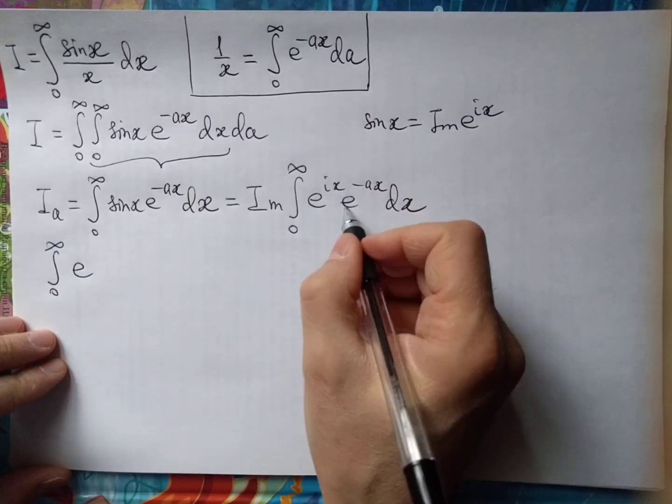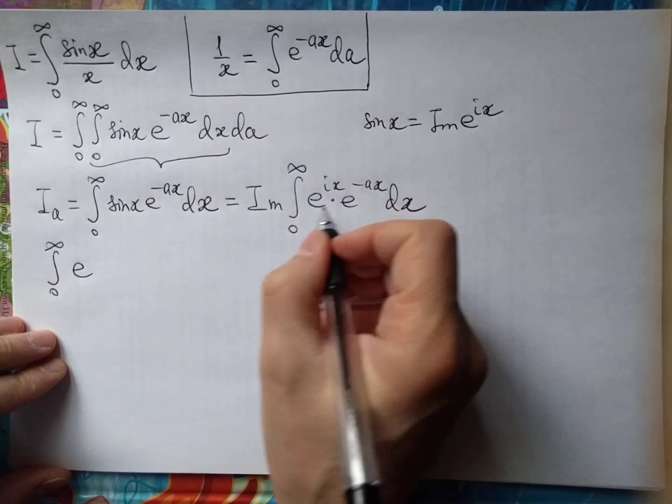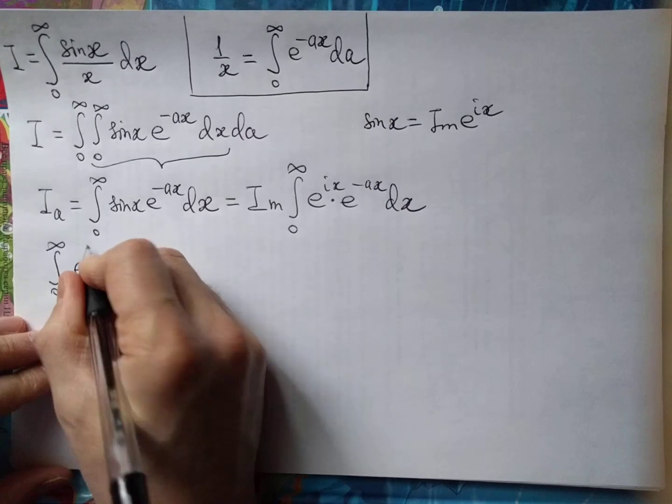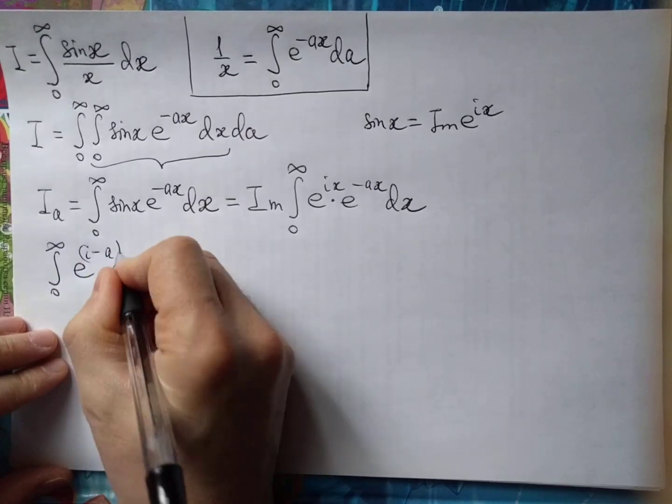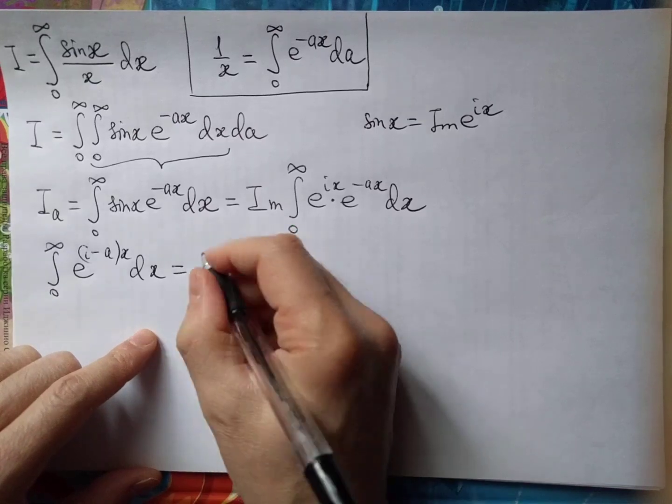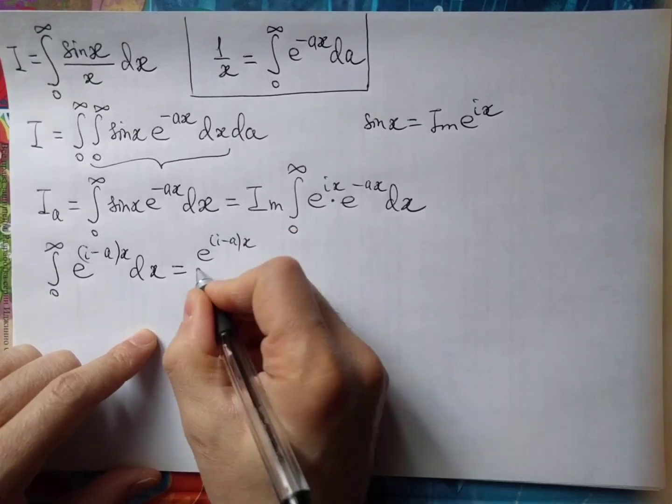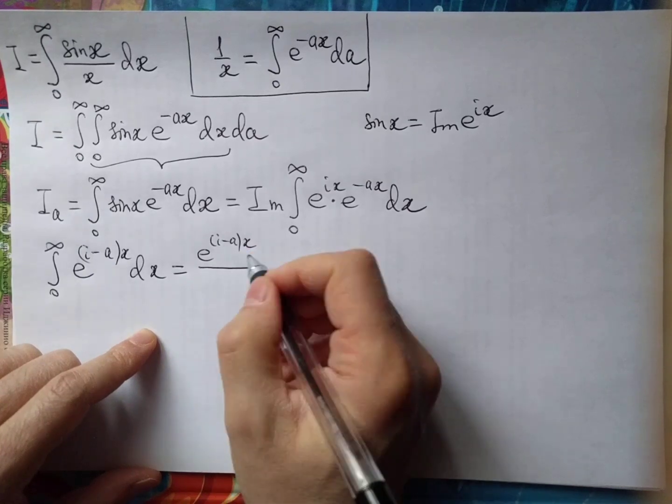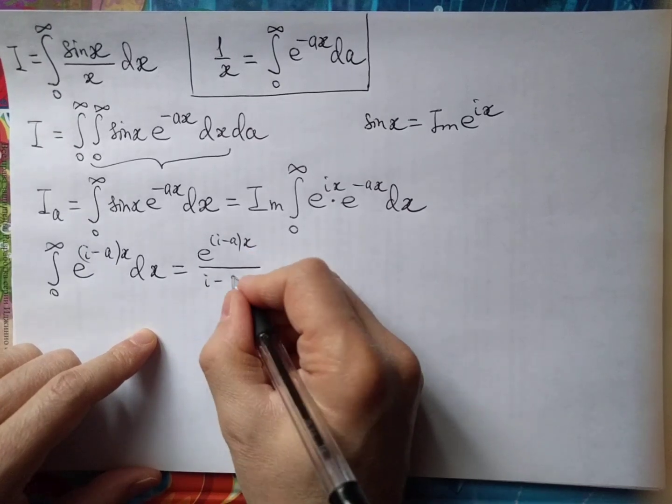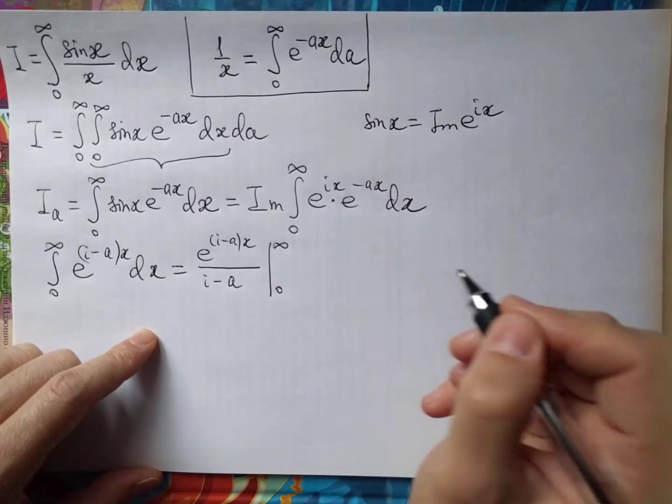We may put these multipliers together since they have the same base. After integrating, we will have a fraction with i minus a in the denominator, and don't forget the two limits.